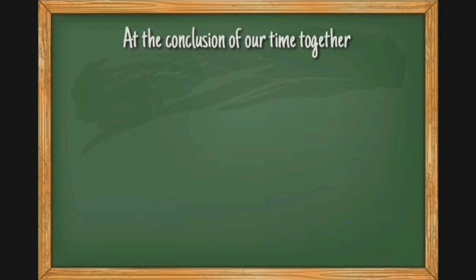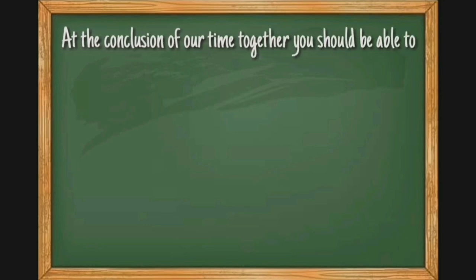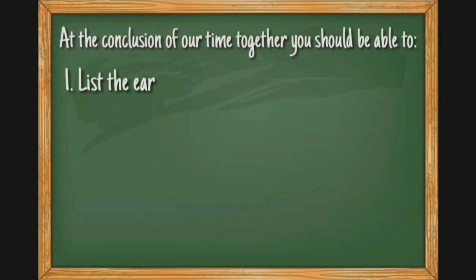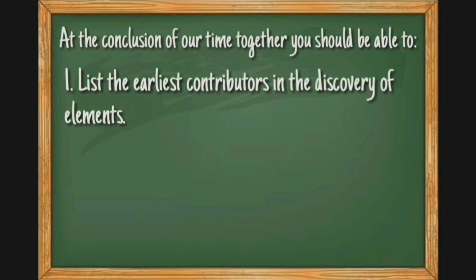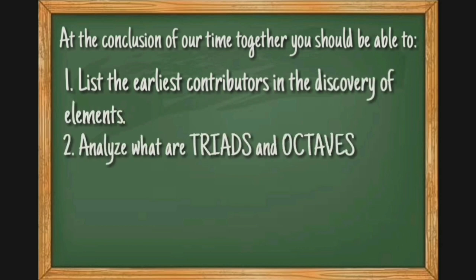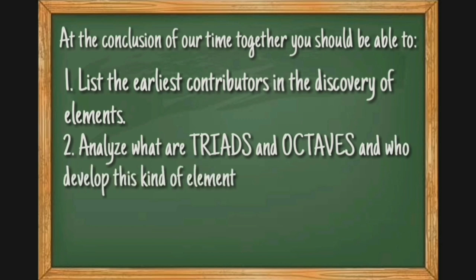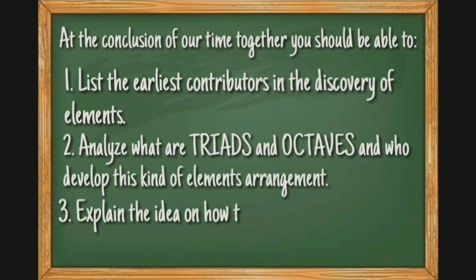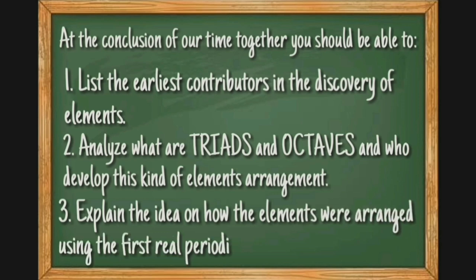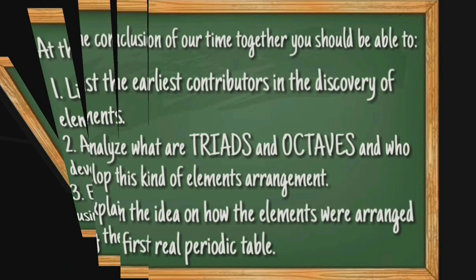At the conclusion of our time together, you should be able to: Number 1, list the earliest contributors in the discovery of elements; Number 2, analyze what are triads and octaves and who developed this kind of elements arrangement; Number 3, explain the idea on how the elements were arranged using the first periodic table.